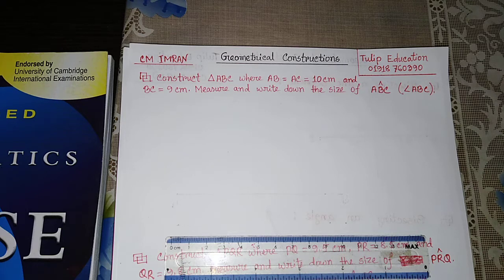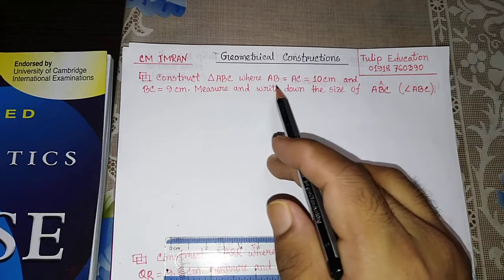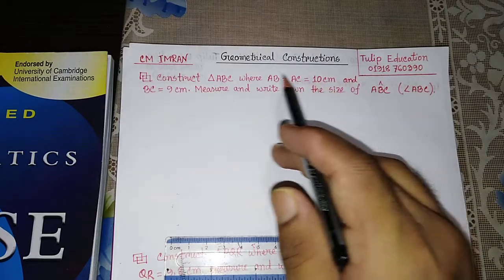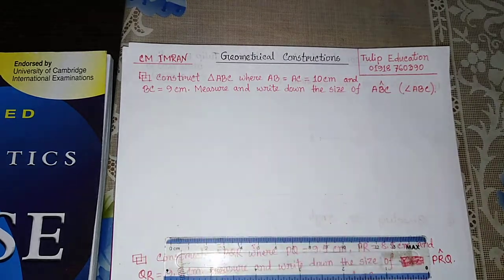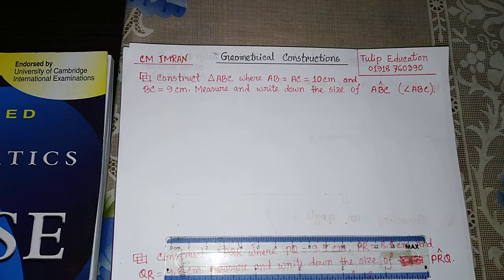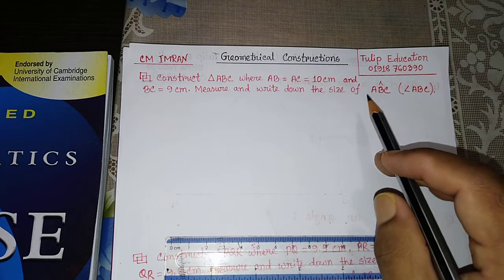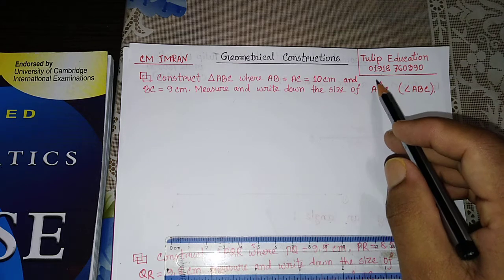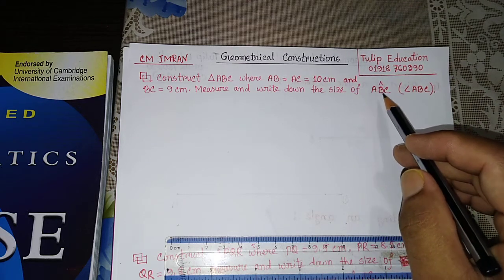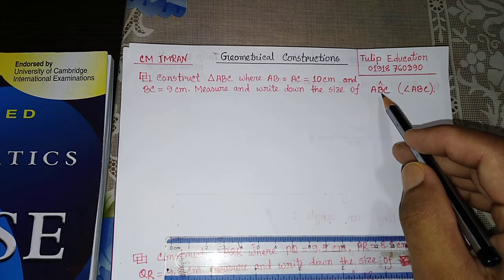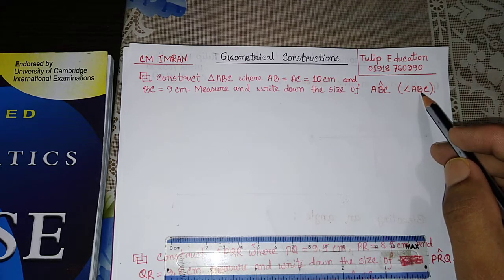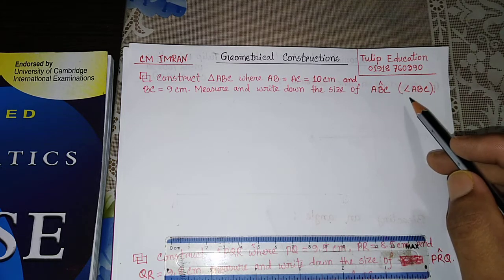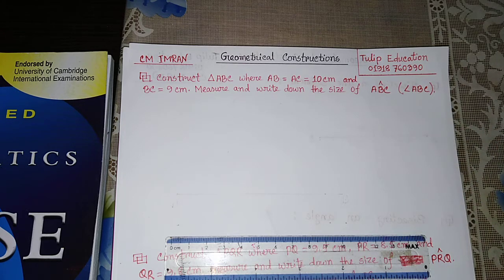We are going to construct the triangle ABC where AB equal to AC equal to 10cm, and BC equal to 9cm. We will find the size of angle ABC. If you see angle ABC, you can see the sign of B — this is angle B. That means the B-angle measurement is to be found. So we need to find angle ABC, the B-angle of triangle ABC.